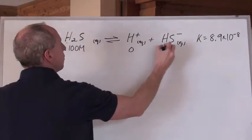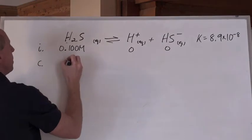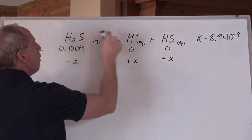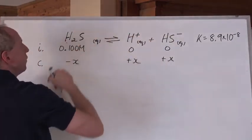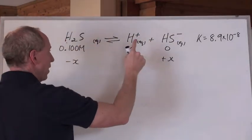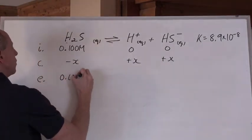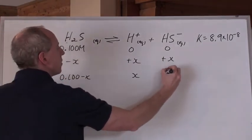Initially, we have 0.100M H2S and nothing here and nothing here. What's the change going to be? This loses X to gain X here and X here. The coefficients are all ones, so it's negative X and plus X and plus X. At equilibrium, we have 0.100 minus X, and X, and X.